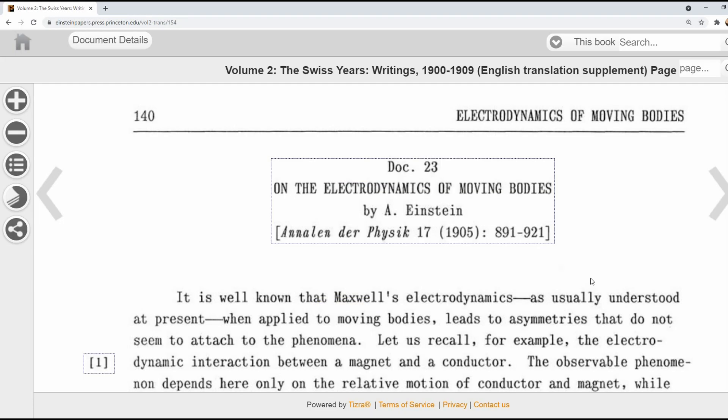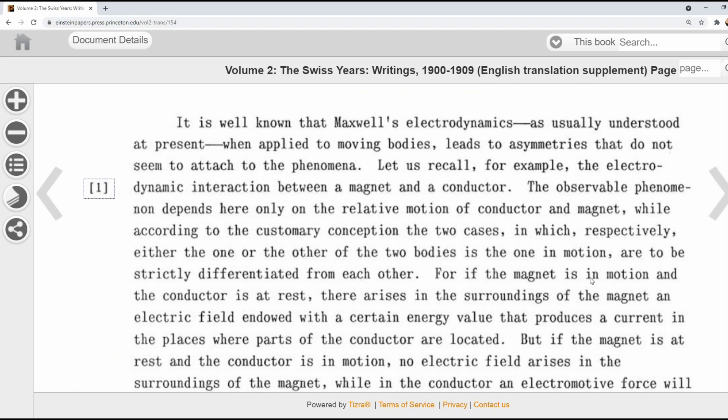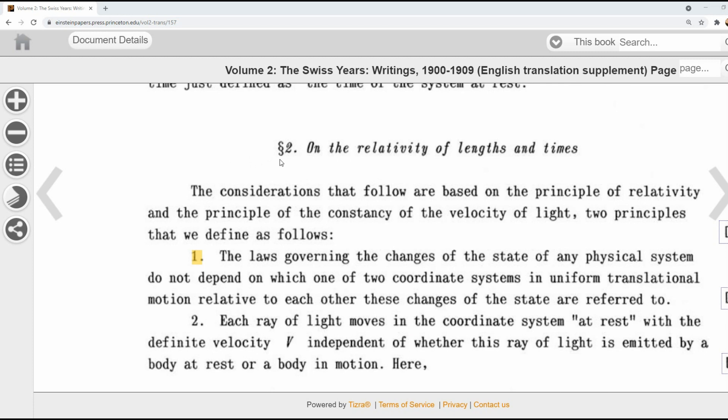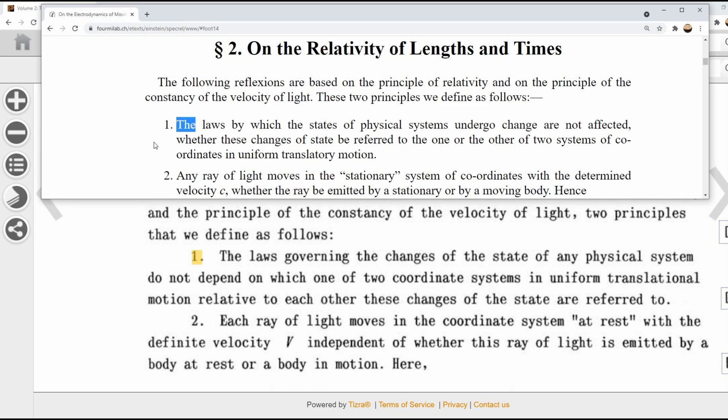Let's take a look at Einstein's 1905 paper and what he says about the principle of relativity. Einstein is proposing to get rid of this idea of a universal at rest. And now any coordinate system can claim that they are at rest as long as they meet the criteria of constant motion or no motion. Coordinate systems that are accelerating or decelerating do not apply to the principle of relativity. At the start of section 2, Einstein again defines the principle of relativity. I put up a second translation here because the wording is kind of clumsy.